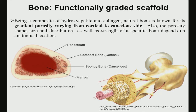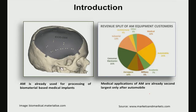In biomedical applications, additive manufacturing and 3D printing techniques have attracted wide attention because bone is a natural biocomposite made of hydroxyapatite and collagen, with varying porosity. This gradient porosity varies from cortical to cancellous side, and pore shape, pore size, distribution, and strength depend on anatomical location. It is very difficult to mimic this gradient porous structure in synthetic materials, which drives the adoption of 3D printing for tissue engineering.